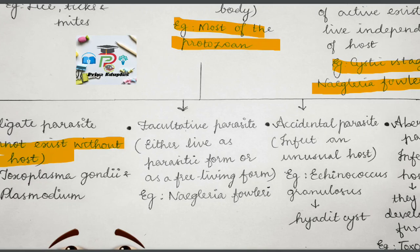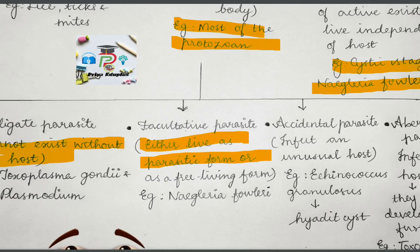Next is facultative parasites. Facultative parasites can live either as a parasitic form or as a free living form. Example is Naegleria fowleri. Next is accidental parasites. Accidental parasites are parasites which infect an unusual host — usually that animal wouldn't be the host, but accidentally they get infected. Example is Echinococcus granulosus, which infects man accidentally giving rise to hydatid cyst.